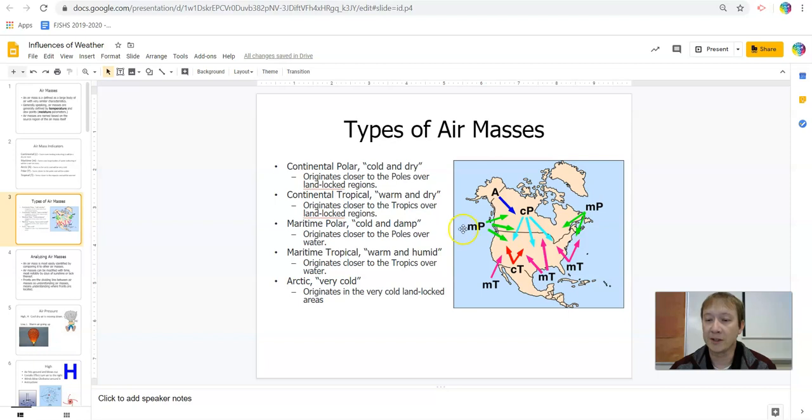The maritime polar we can see on the north coasts here, both northeast and northwest. The maritime, in the case that it's going to contain more moisture since it's forming over water, whereas polar indicates cold. So this is going to bring that cold, damp air in from the oceans in the northeast and northwest.